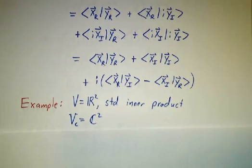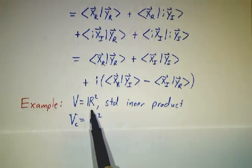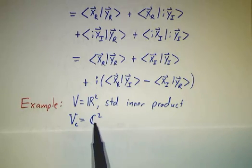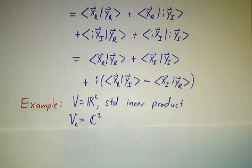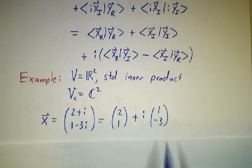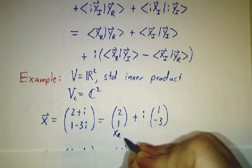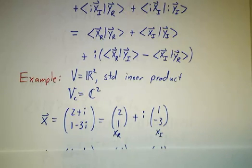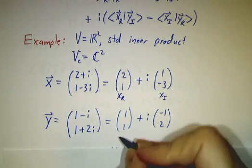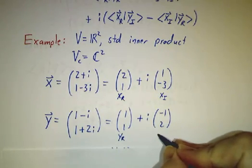For example, let's suppose we've got R2 — that's about as simple a real vector space as you're going to get, except for R itself — and let's suppose it has the standard inner product. You complexify and take a real vector plus i times a real vector. That's just a complex vector. For example, x might be (2+i, 1-3i), which you can think of as (2,1) plus i times (1,-3), where (2,1) is xr and (1,-3) is xi. And if I gave you another vector y = (1-i, 1+2i), you can think of it as a real part (1,1) plus i times an imaginary part (-1, 2).